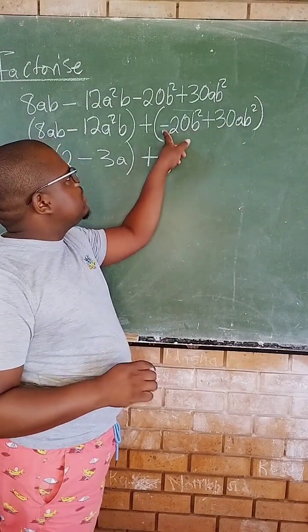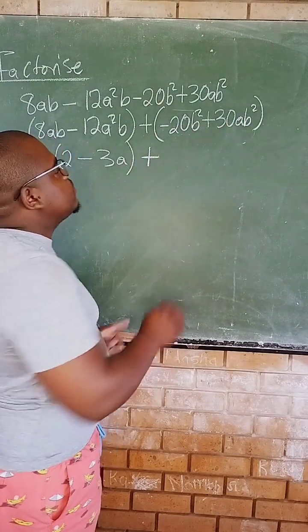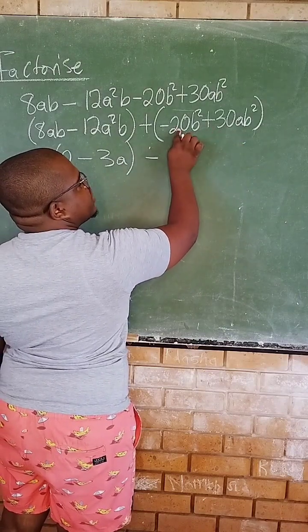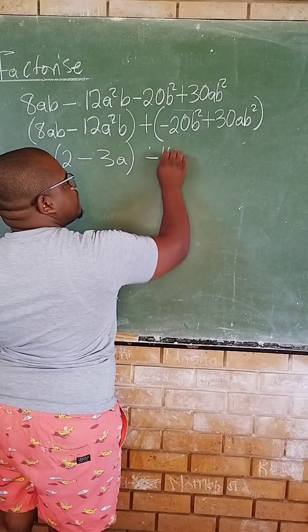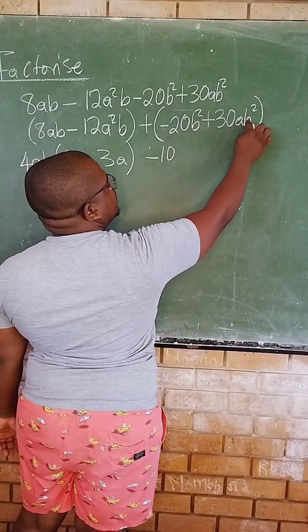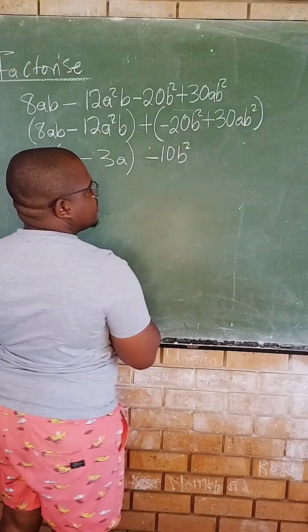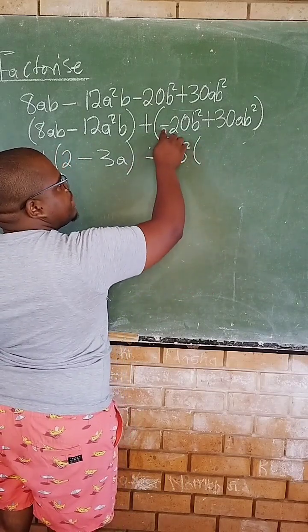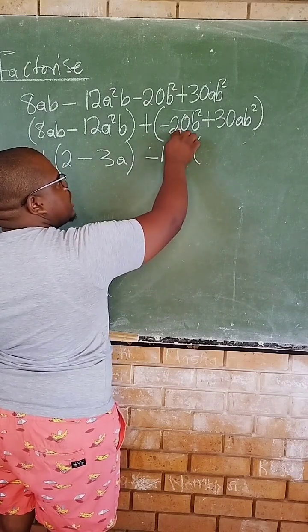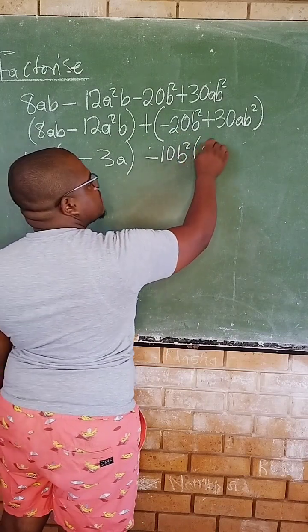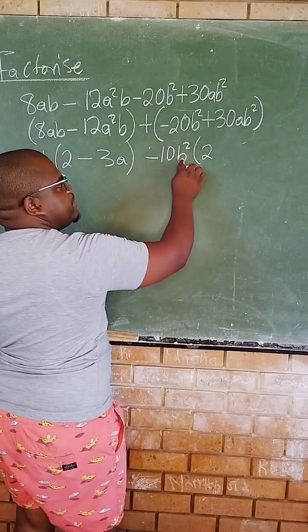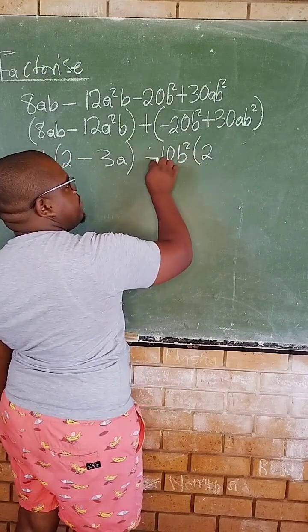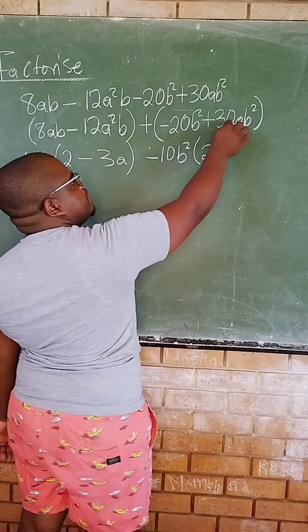Now for the second group, since it can't be positive, we take out a negative as a common factor. The highest common factor for 20 and 30 is 10, so we have negative 10 outside. We also take out b squared as a common factor. Remember, negative divided by negative is positive, so 20 divided by 10 gives 2, and b squared divided by b squared gives 1. Then 30 divided by 10: since positive divided by negative gives a negative, that gives us negative 3.